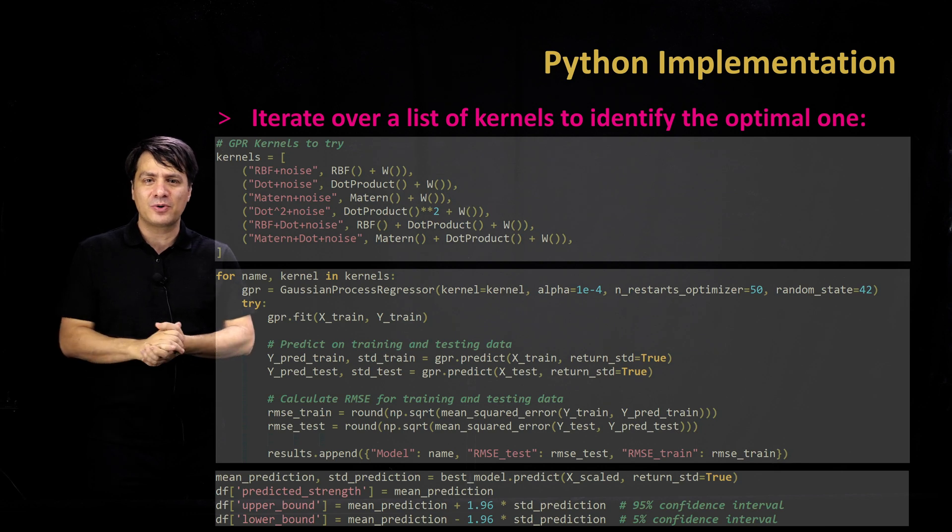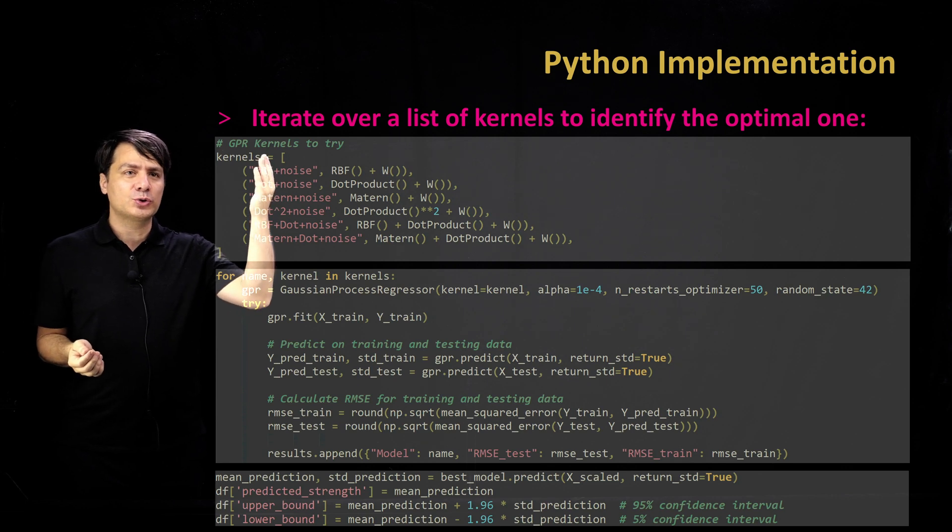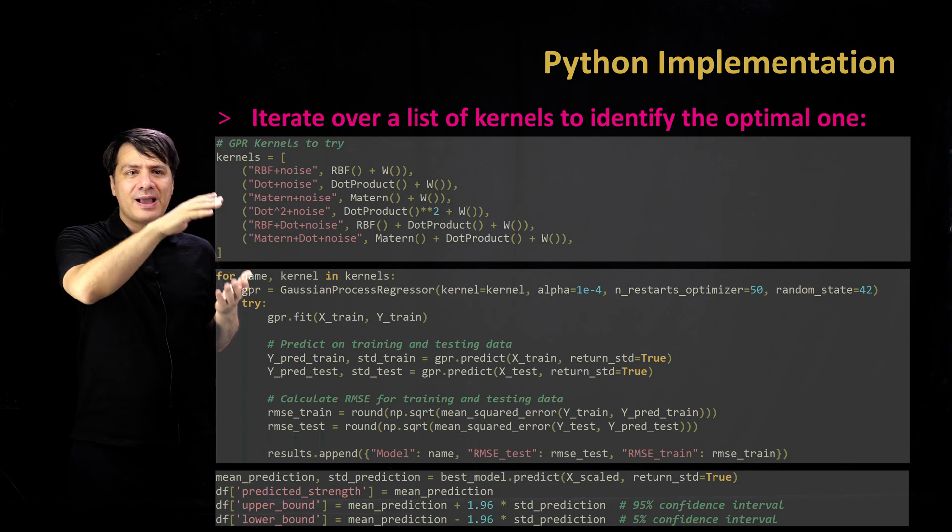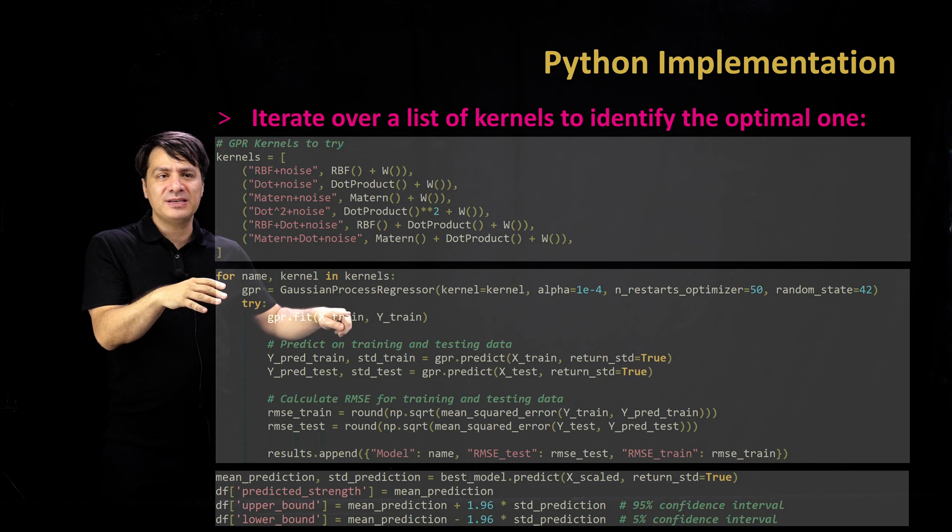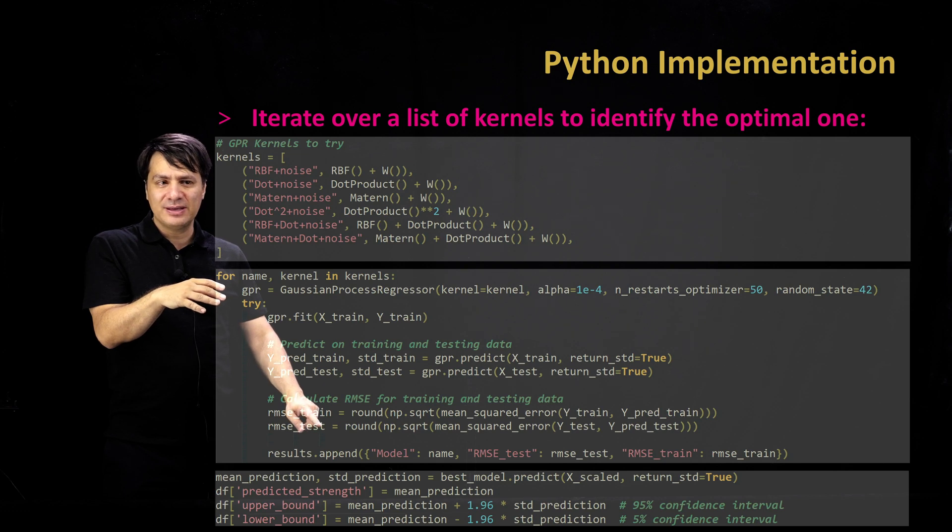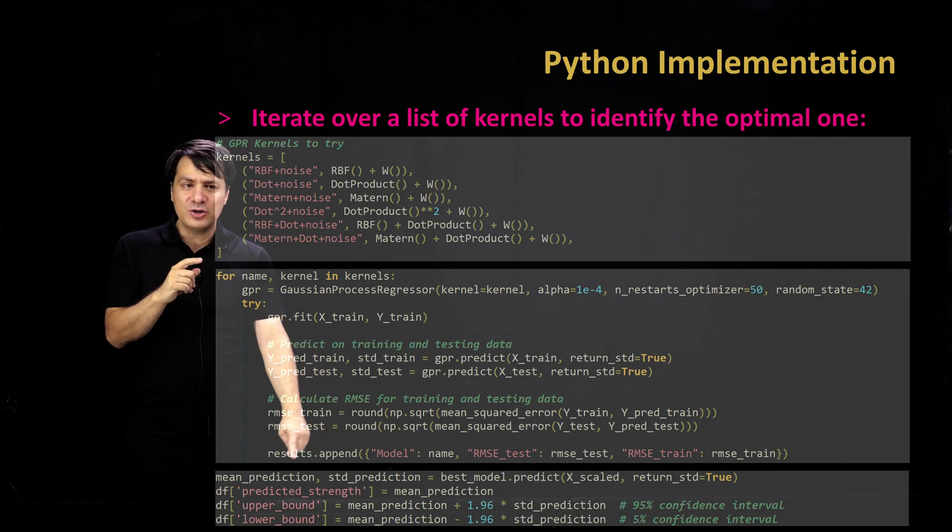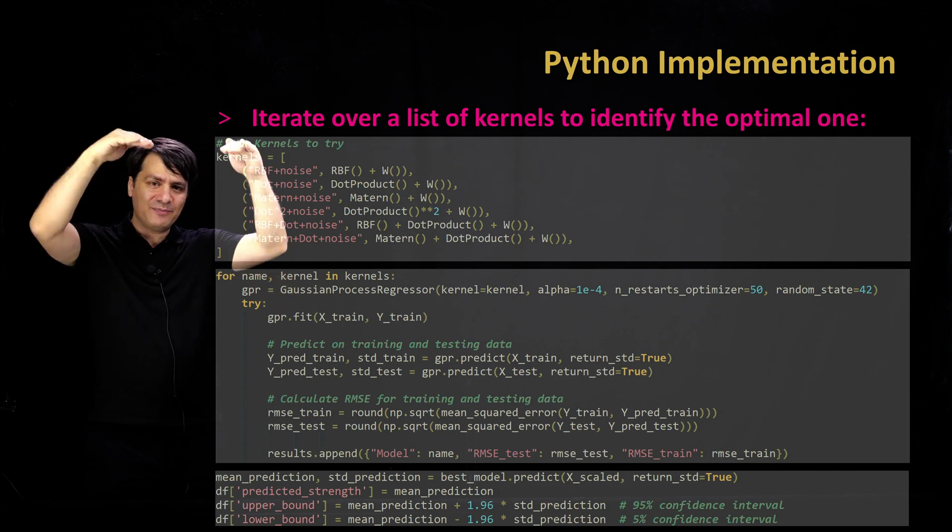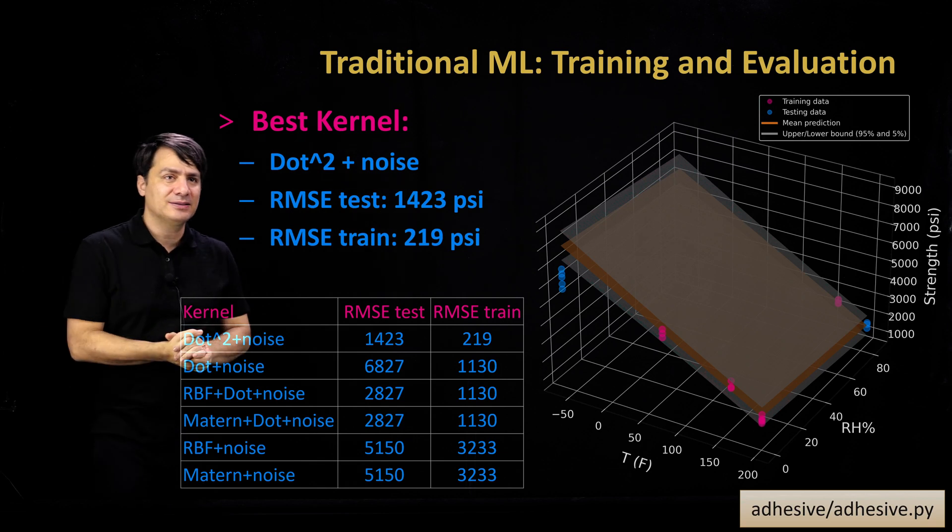I mentioned at the beginning of the lecture series that one of the most important things for Gaussian process regression is the choice of kernel. Since we don't know what is the choice of kernel, we're going to go through a library of kernels. A kernel library is defined at the beginning, and we go through a loop where these kernels are called one by one. We are fitting the Gaussian process regression model, checking the training and test score, and adding them to the list. At the end, we rank them and report them. But in addition to ranking and reporting, we are using the trained model at the end for predictions.